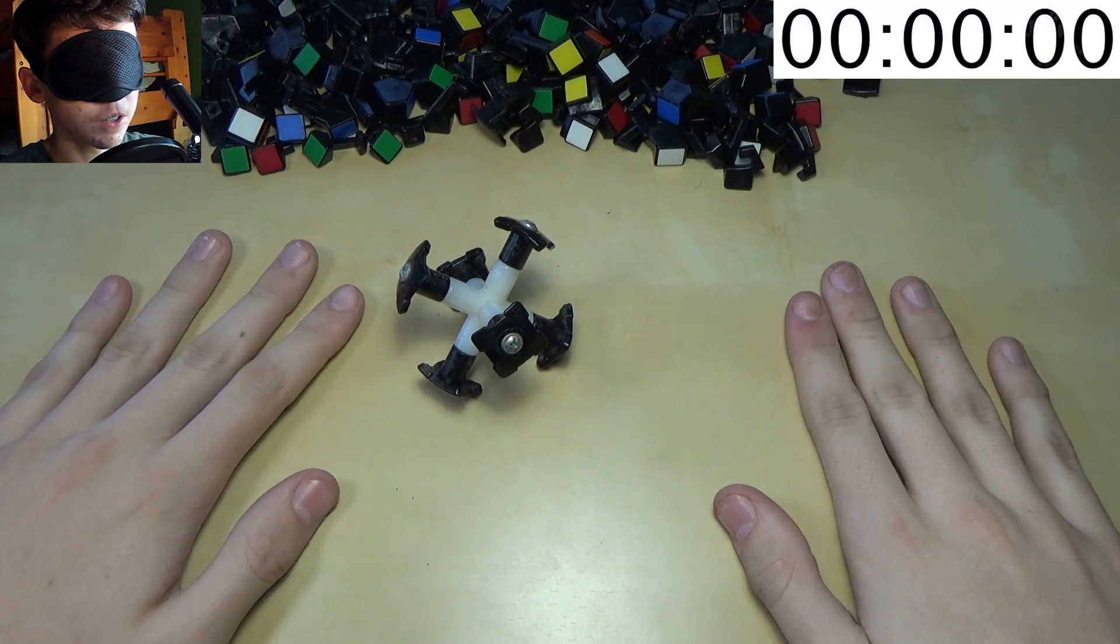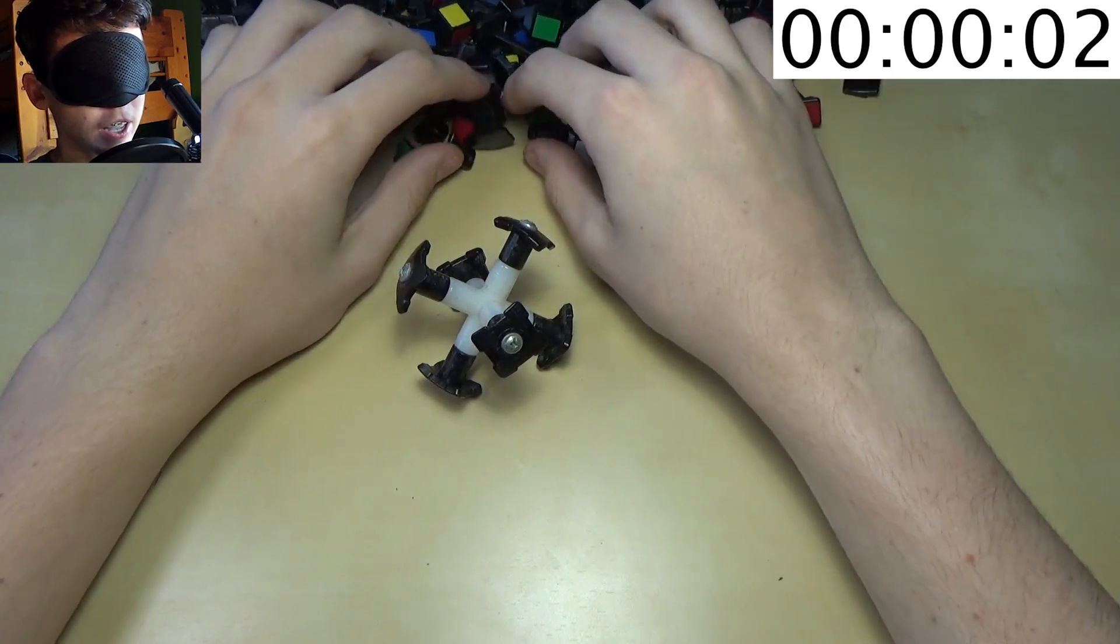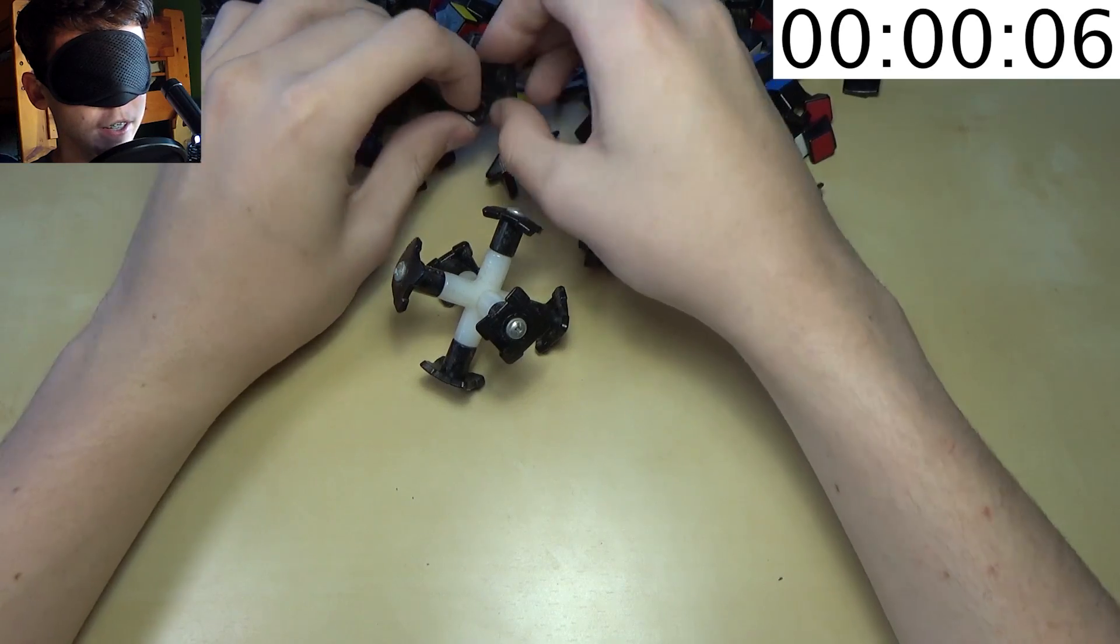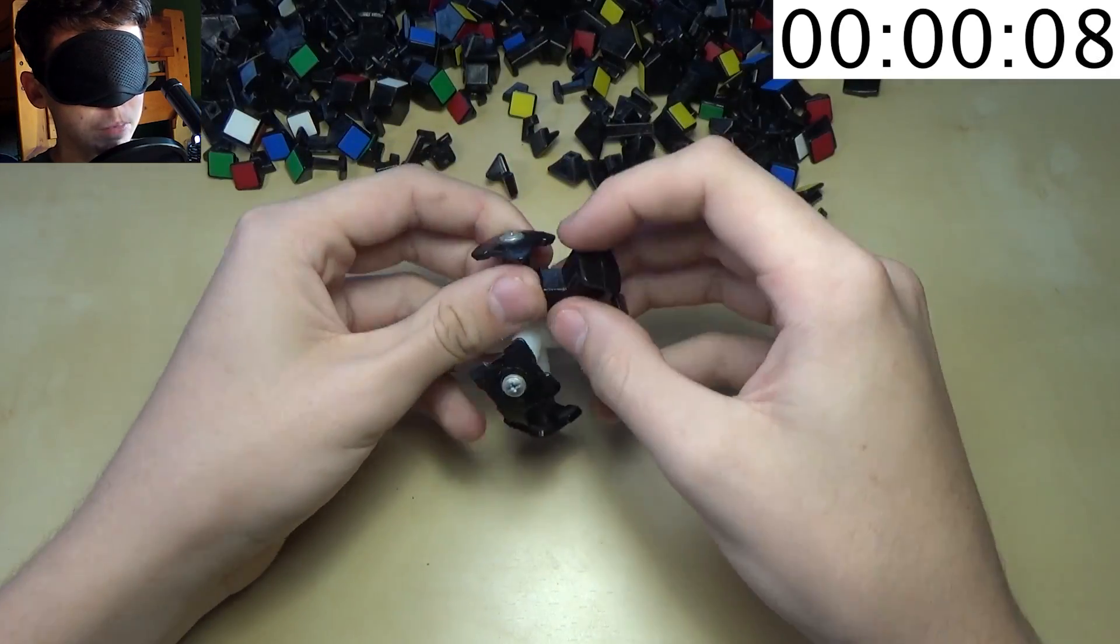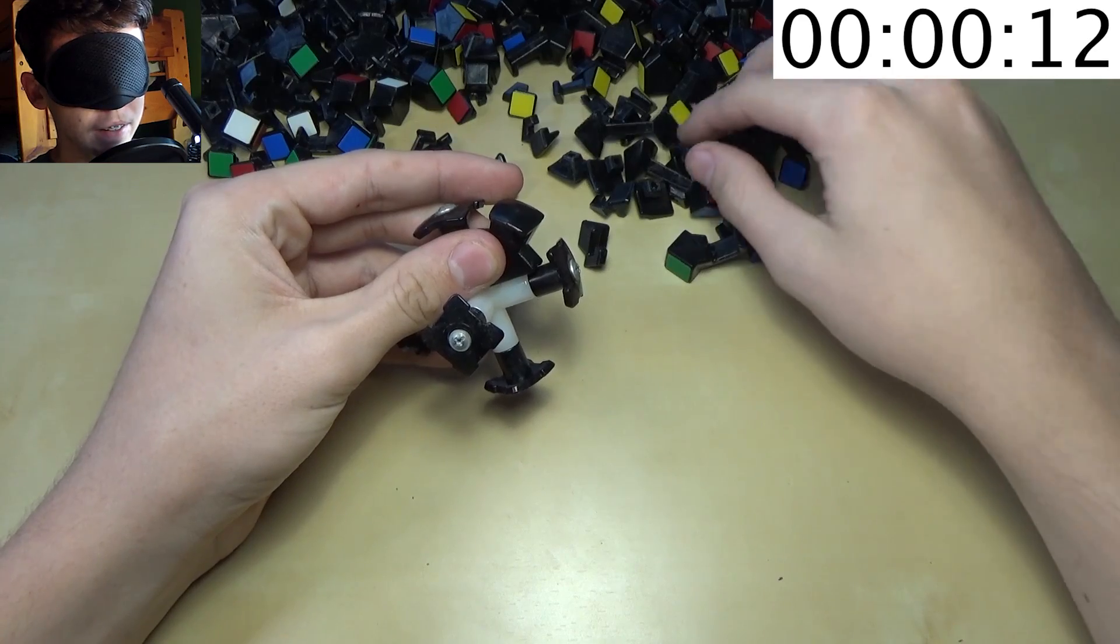3, 2, 1, start. So I think the hardest part of this challenge will be to just find the pieces. And so the first thing we need to find is one of these pieces. Let's put that in here and then we need to find two pairs of pieces that go next to that.